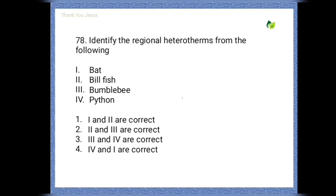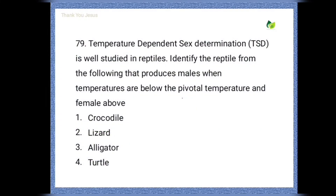Next question: identify the regional heterotherms from the following. Options are: bat, billfish, bumblebee, python. The correct option is the second one — that means billfish and bumblebee.